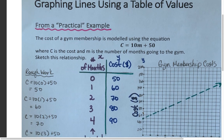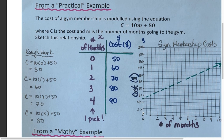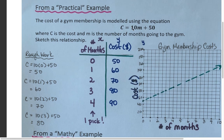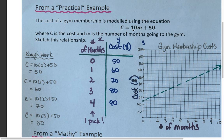For our practical example, we're looking at the cost of a gym membership, modeled by the equation C equals 10m plus 50, where C is the cost and m is the number of months going to the gym. Looking at this equation, I can tell a couple things right away: the 10m means $10 per month, so the rate of change is 10. The 50 has no variable, so it always stays 50 — that's the initial value. So the rate of change is $10 per month and the initial value is $50. The independent variable is m and the dependent variable is C.